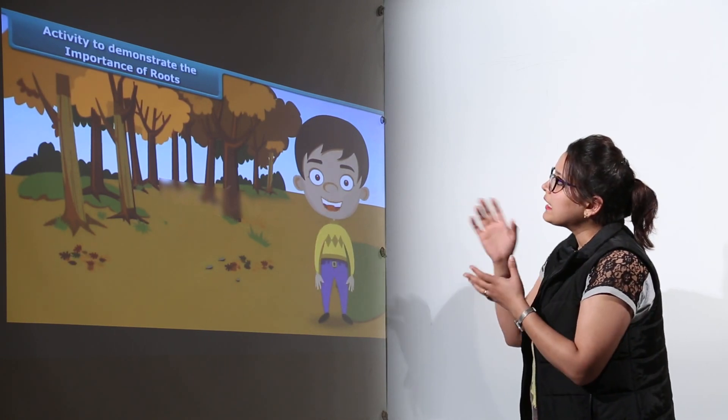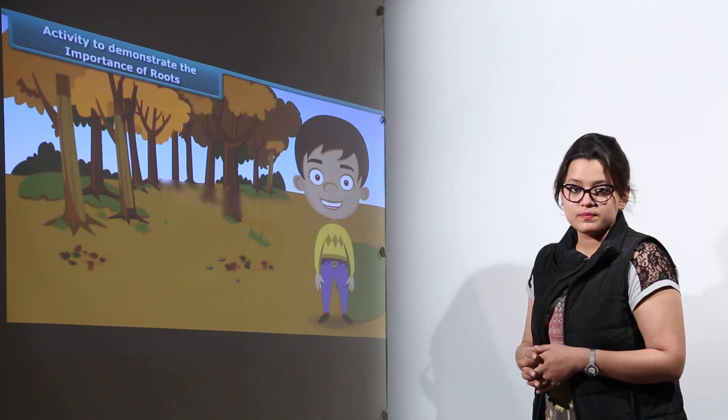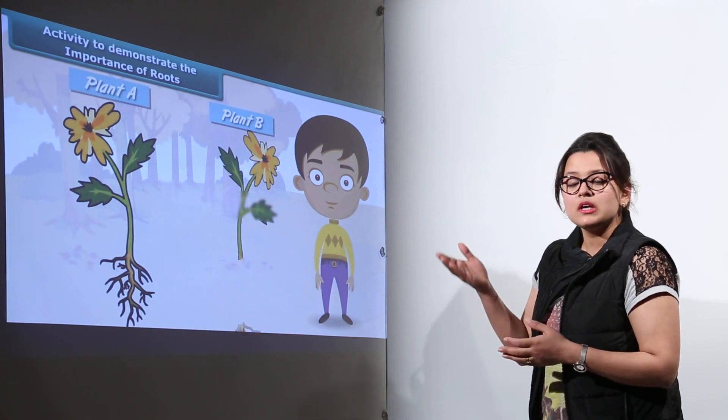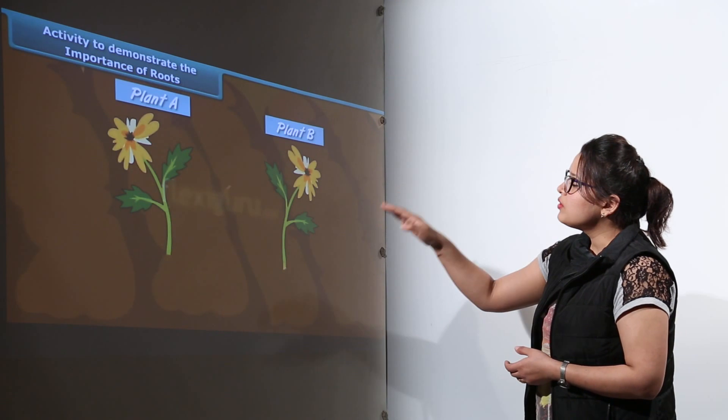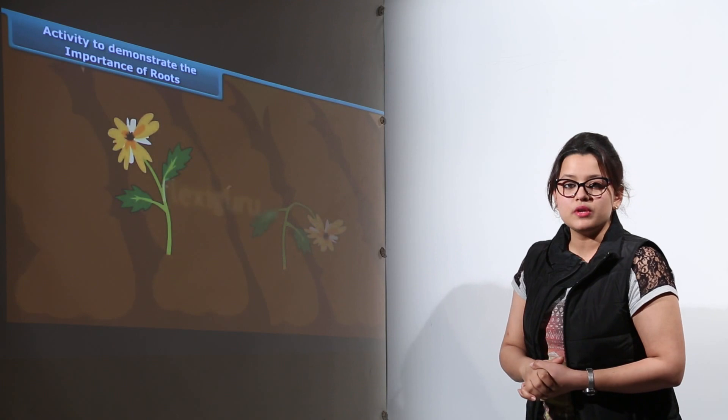Next we have an activity to demonstrate the importance of roots in plants. We take two plants, plant A and plant B. We cut down the roots of one plant, then plant both into the soil and water them for few days.